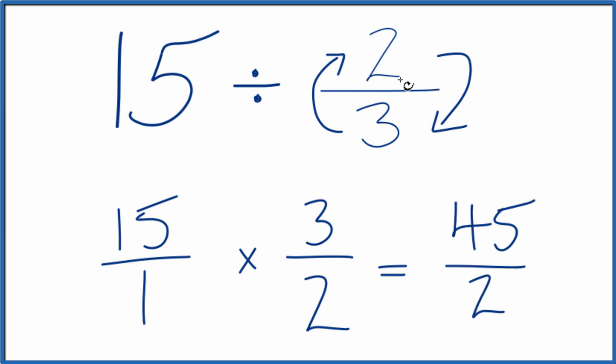So 15 divided by 2 thirds is 45 over 2. This is an improper fraction. 45 is bigger than 2.